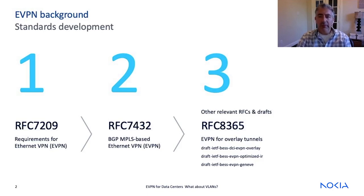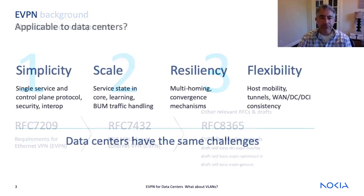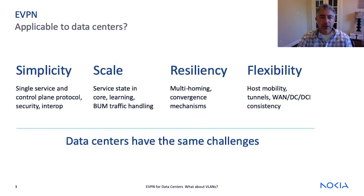EVPN was originally developed to address emerging needs in carrier networks, such as having a single control plane for both L2 and L3 services, scalable service state and efficient address learning, improved and open multi-homing for resiliency, and flexibility for host mobility, data center interconnect, and WAN services. Data centers have many of these same challenges and therefore can benefit from adopting EVPN.